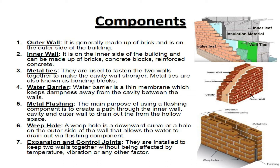Metal flashing: the main purpose of using a flashing component is to create a path through the inner wall cavity and outer wall to drain out water from the hollow space. Weep hole: a weep hole is a downward curve or a hole on the outer side of the wall that allows the water to drain out via the flashing component. Expansion and control joints: they are installed to keep the two walls together without being affected by temperature, vibration, or any other factor.